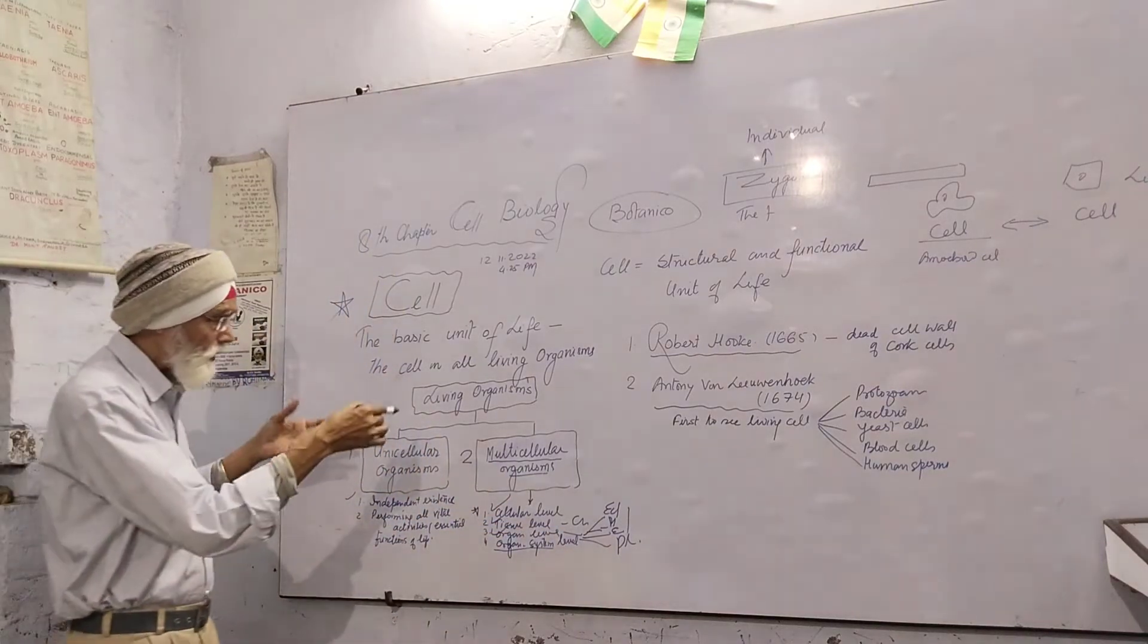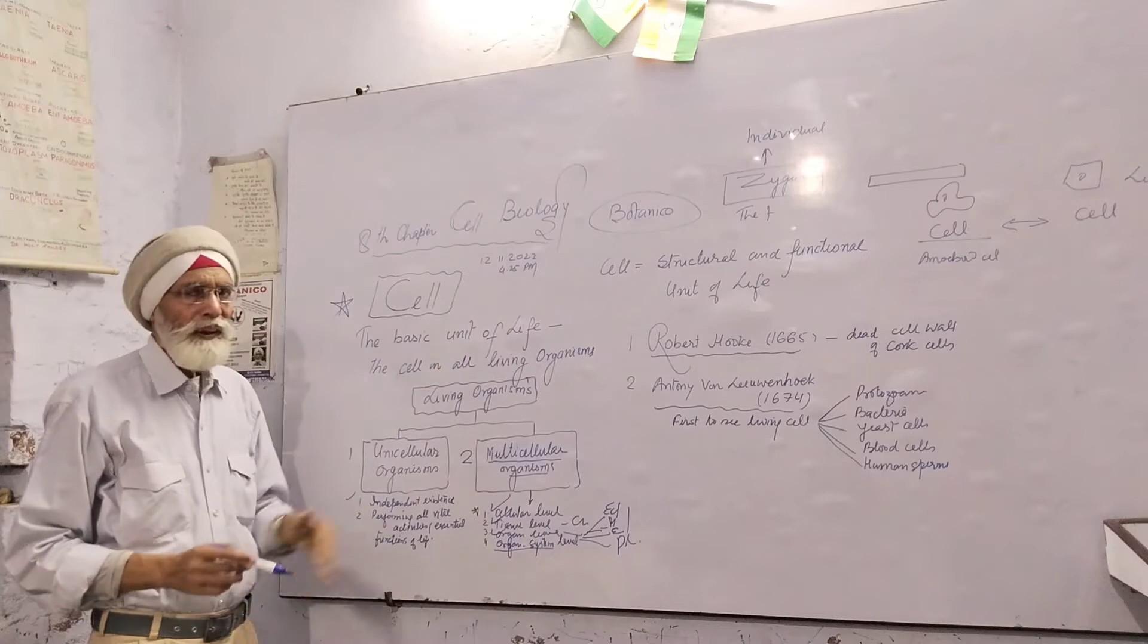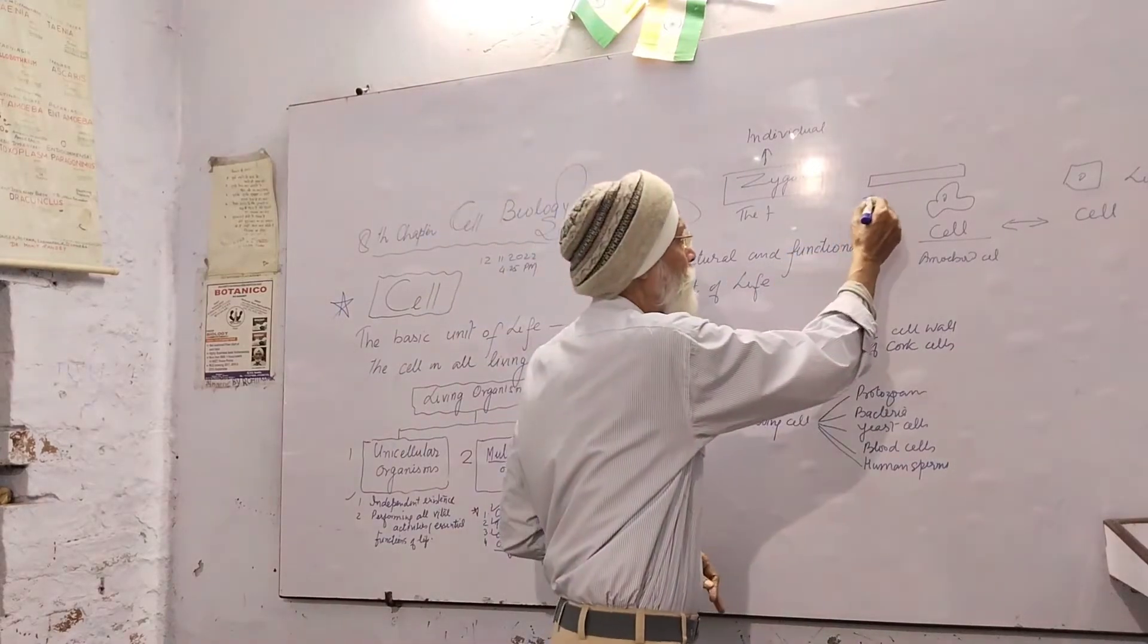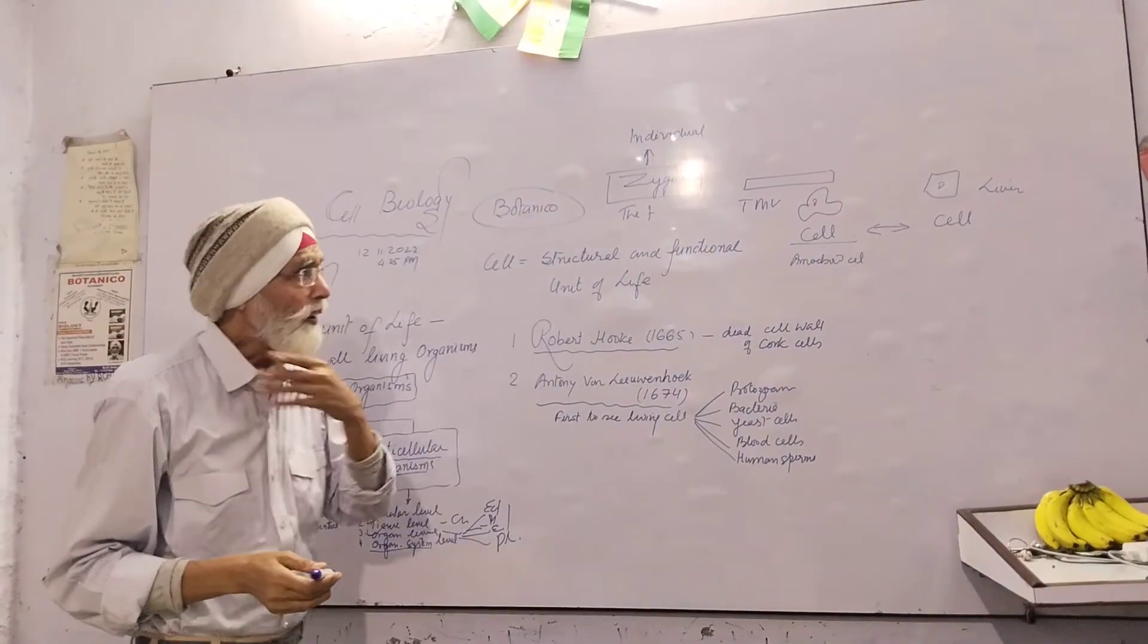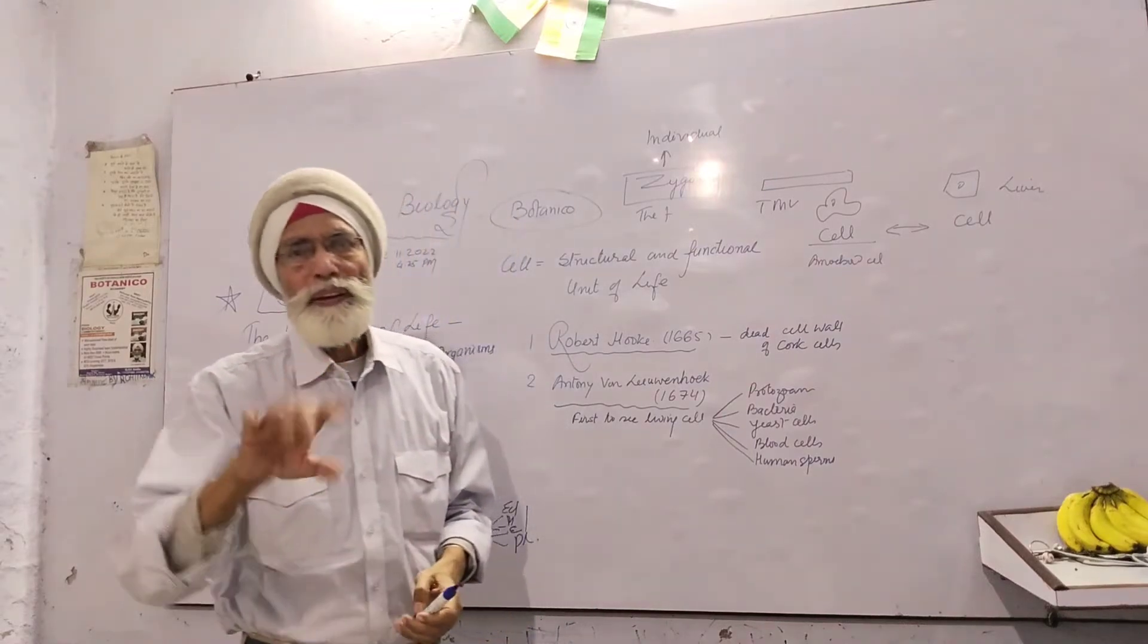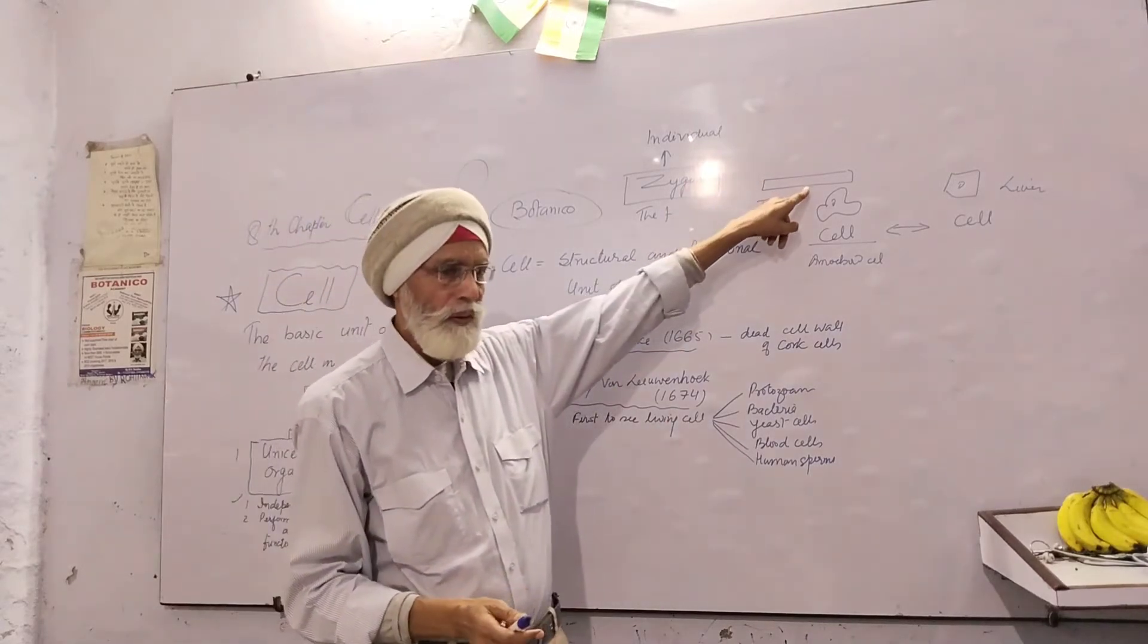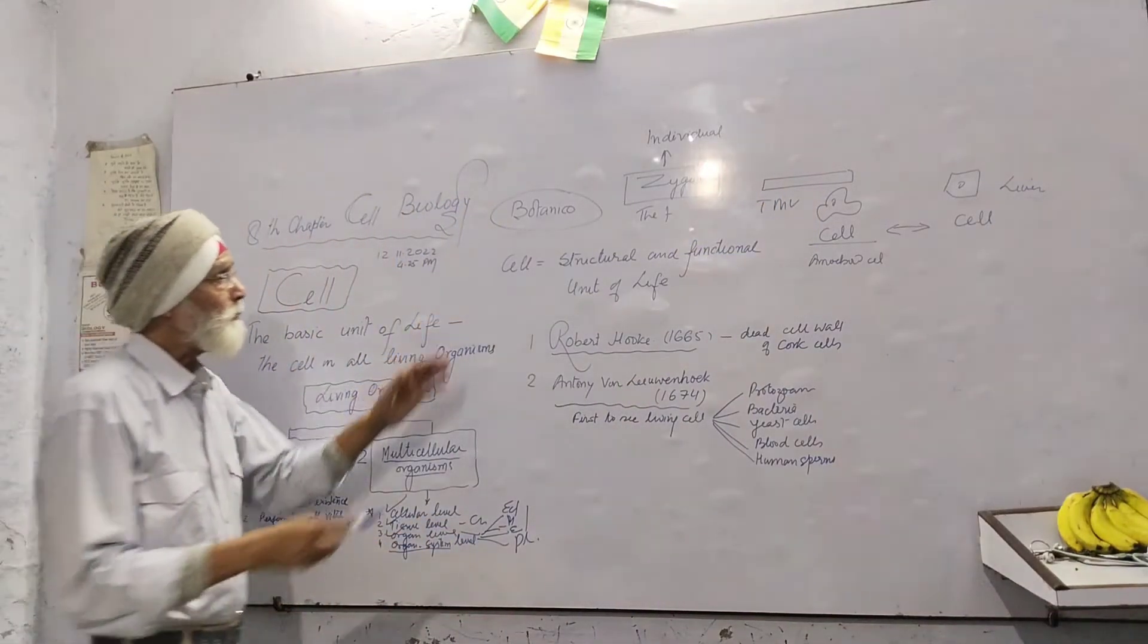This is the simplest question mentioning your answer: the basic unit of life is the cell. We cannot imagine life without cells. As you see in TMV, they don't have cells and can't perform all vital activities. They have living properties only inside the cell. The moment they infect, they utilize the host machinery of the cell and only then can they replicate. Otherwise, they are non-living.